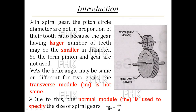Remember this formula for solving numericals: Normal Module MN = Normal Pitch PN divided by π. This is based on the circular pitch formula PC = π × Module. So Normal Module MN = PN / π. Normal Pitch and Normal Module are taken into consideration because the Transverse Module is not the same for both gears.